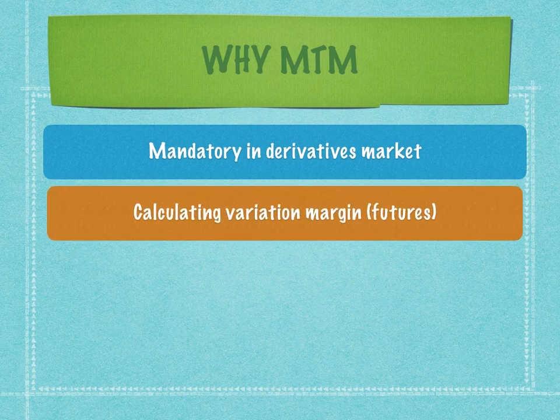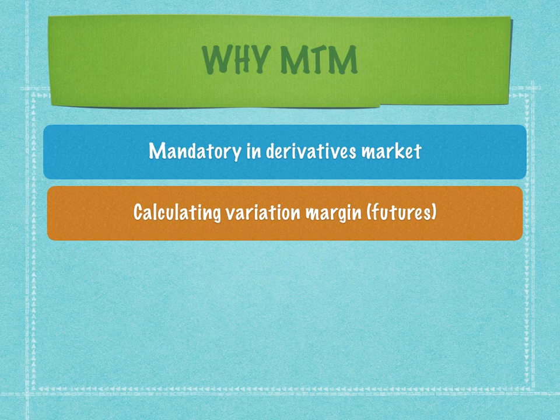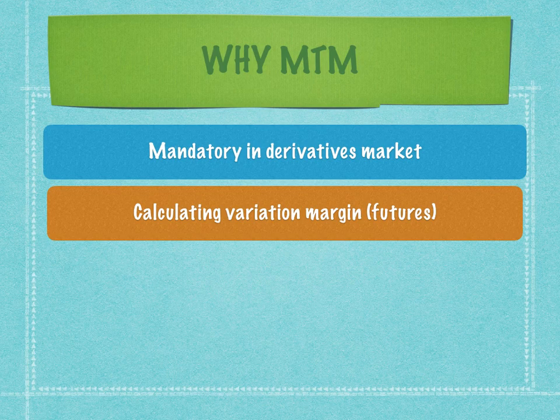Mark to market is primarily needed for the calculation of variation margin. In the futures and options market, traders play on leverage — meaning they have 100% exposure to the security but only pay 15–20% of it; the remaining 80% is leveraged. Options and futures are highly leveraged trading positions, and because of this, at the time of deleveraging the outcome could be fatal, resulting in a phenomenal amount of loss.